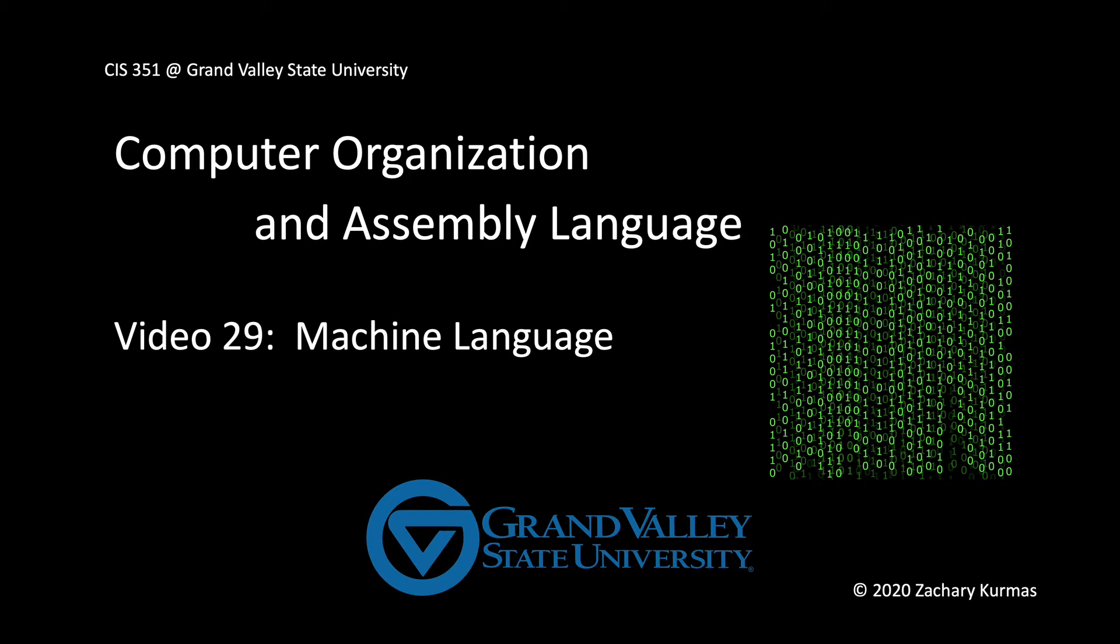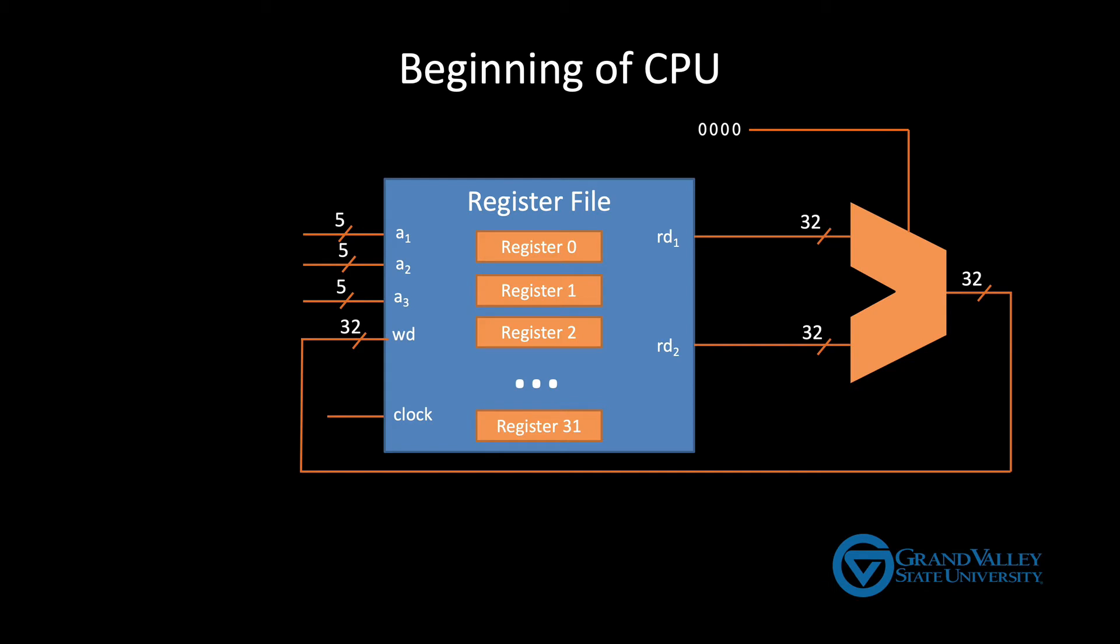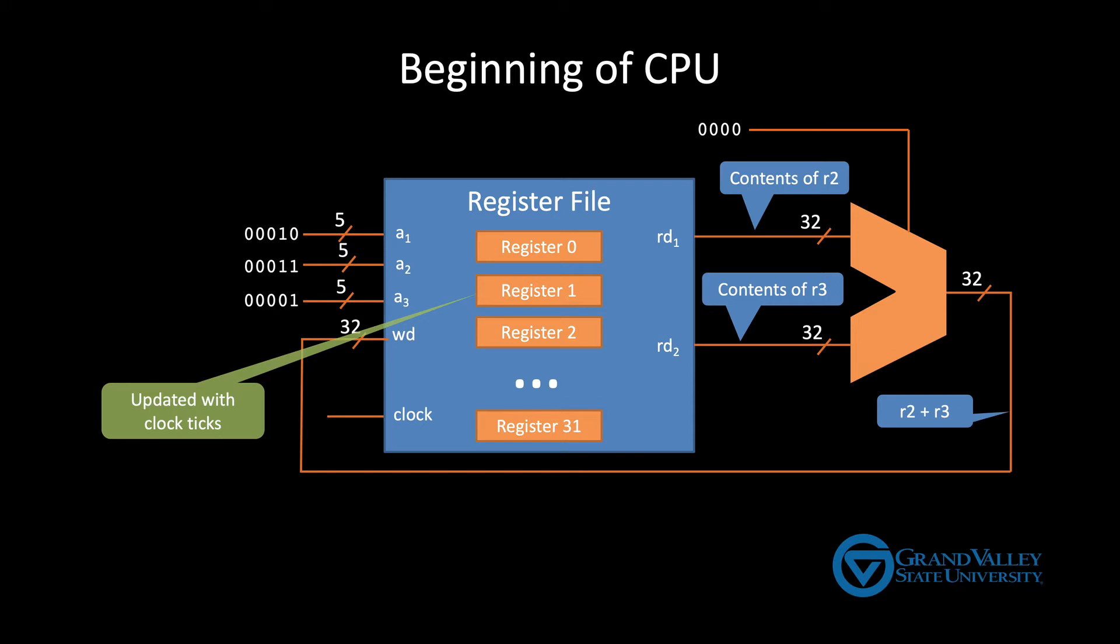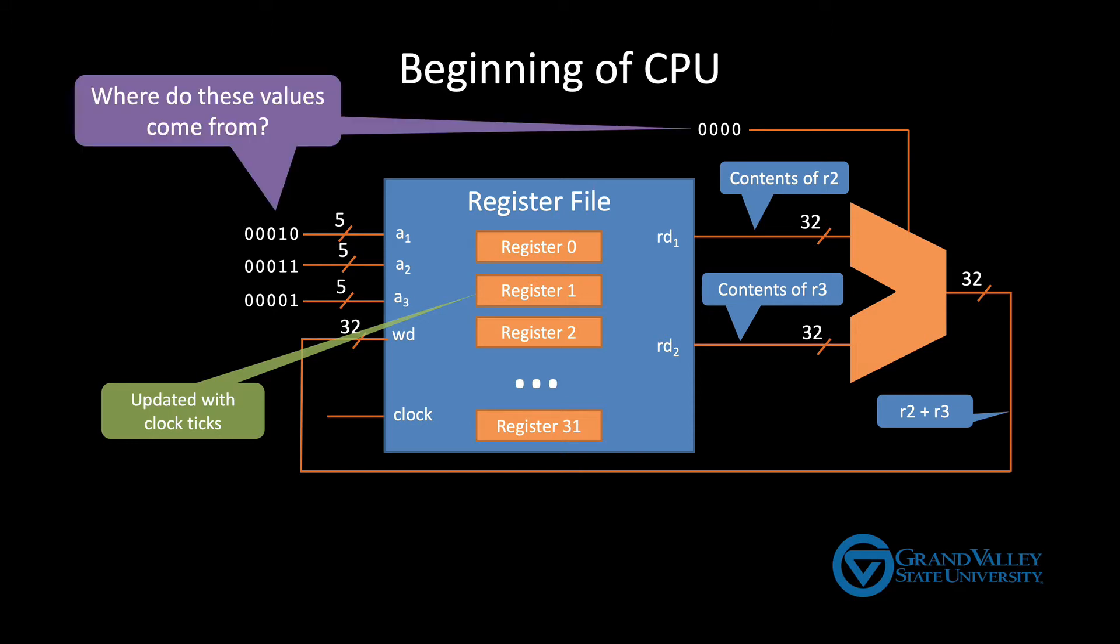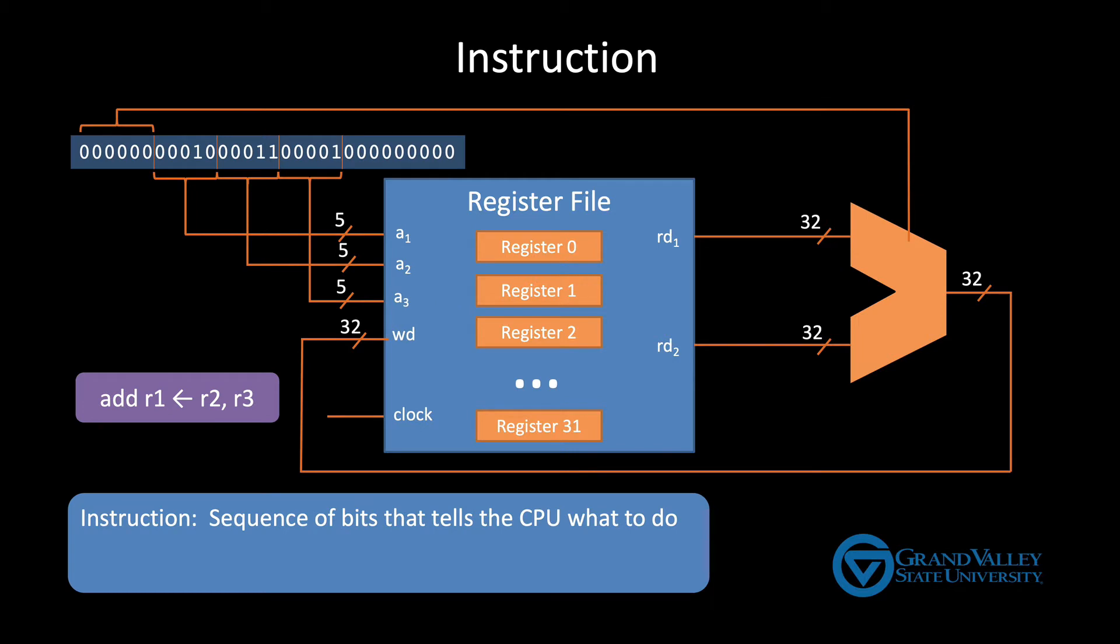In the previous video we saw how a CPU executes a simple arithmetic instruction. The instruction specifies which registers to read. The contents of those registers are sent out from the register file into the ALU. Then the ALU performs the desired operation and the result is saved back into the register file. But where do these input values come from? Well they come from the instruction which is a sequence of zeros and ones that tells the CPU what to do.